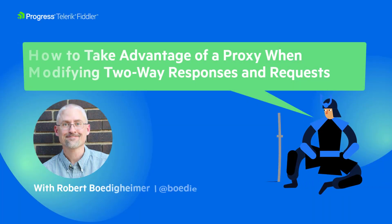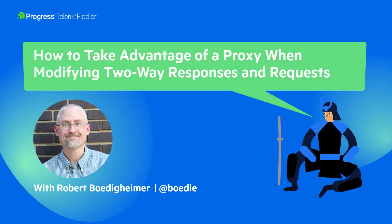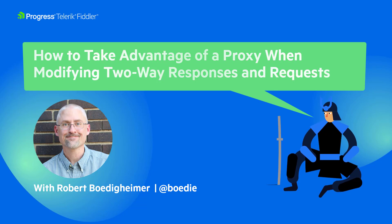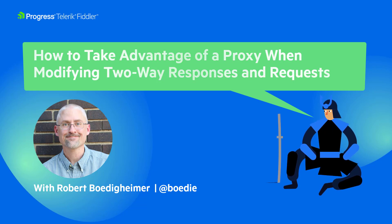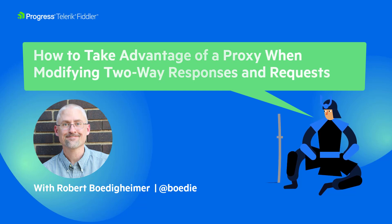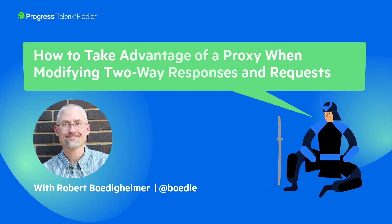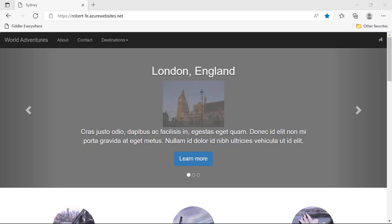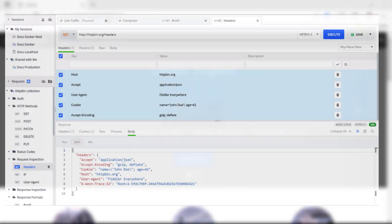In this video we're going to focus on making modifications to requests going to the server or responses coming back from the server. Fiddler Everywhere is positioned uniquely as a proxy, sitting between the client browser and the server. We're going to take advantage of that position to make modifications either on the way to the server or on the way back, using a combination of either the Composer or the Rules.